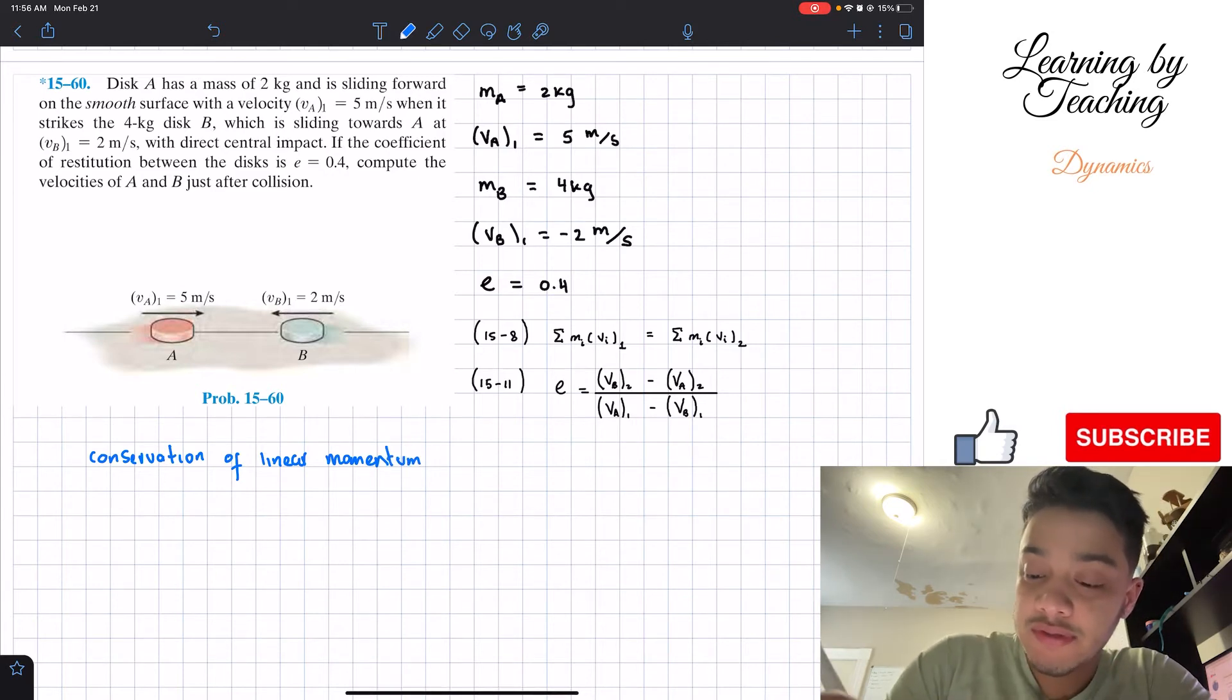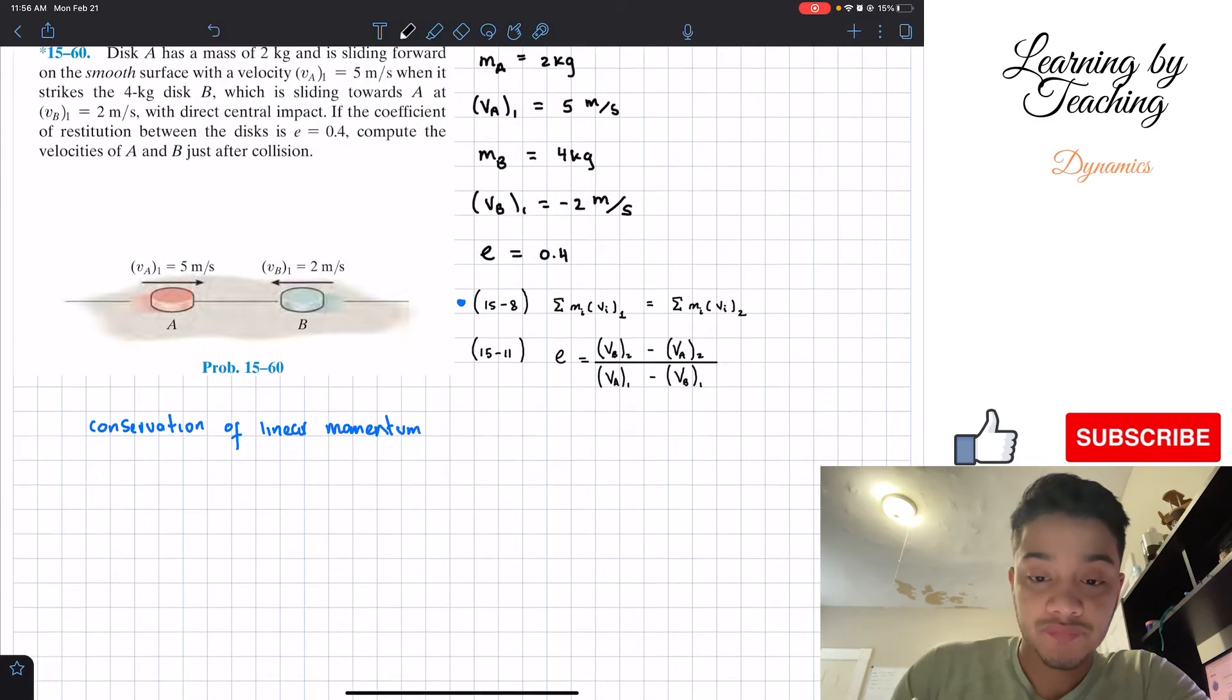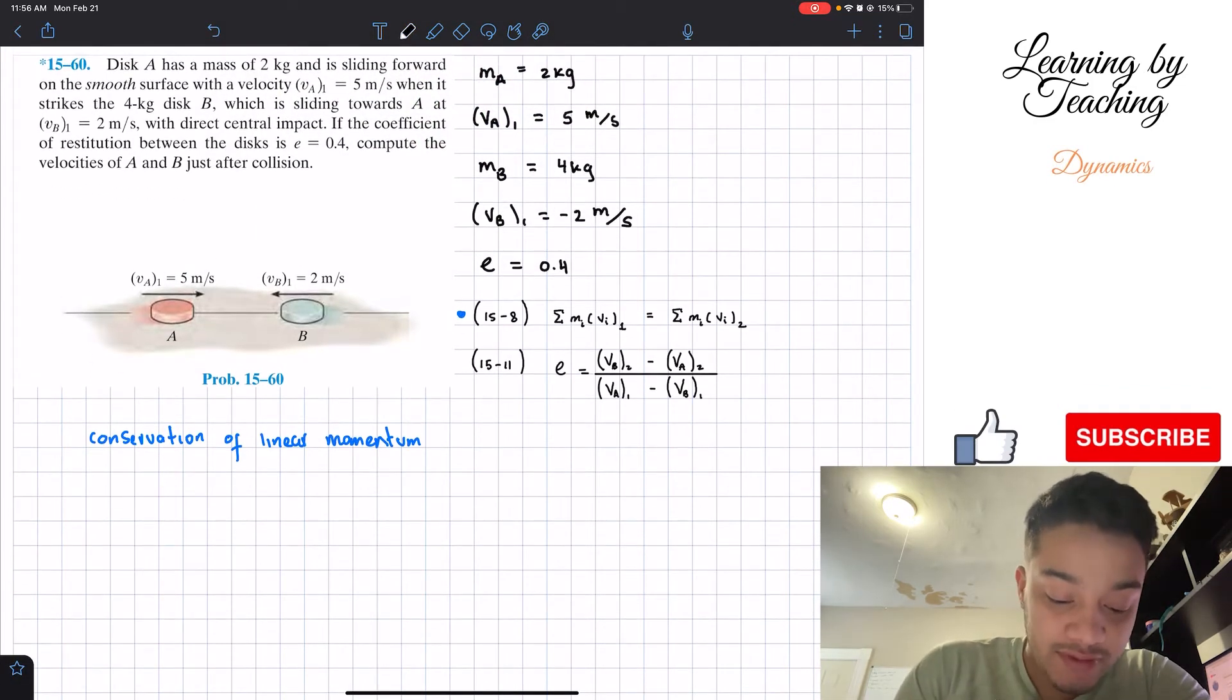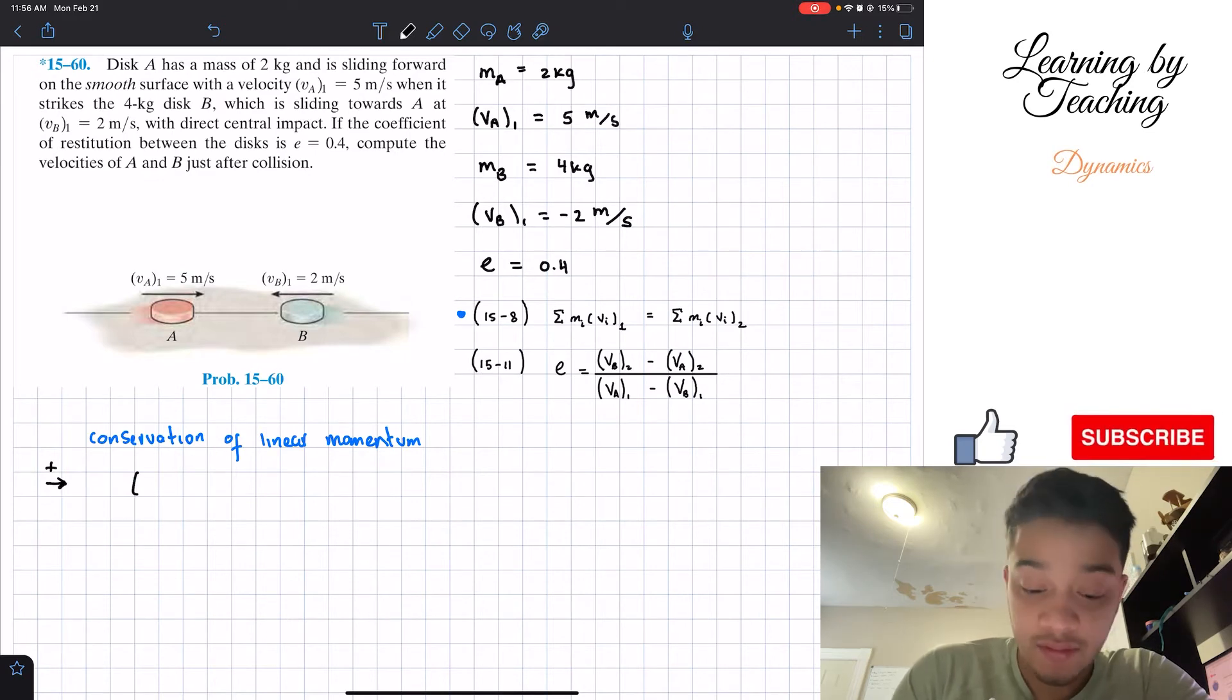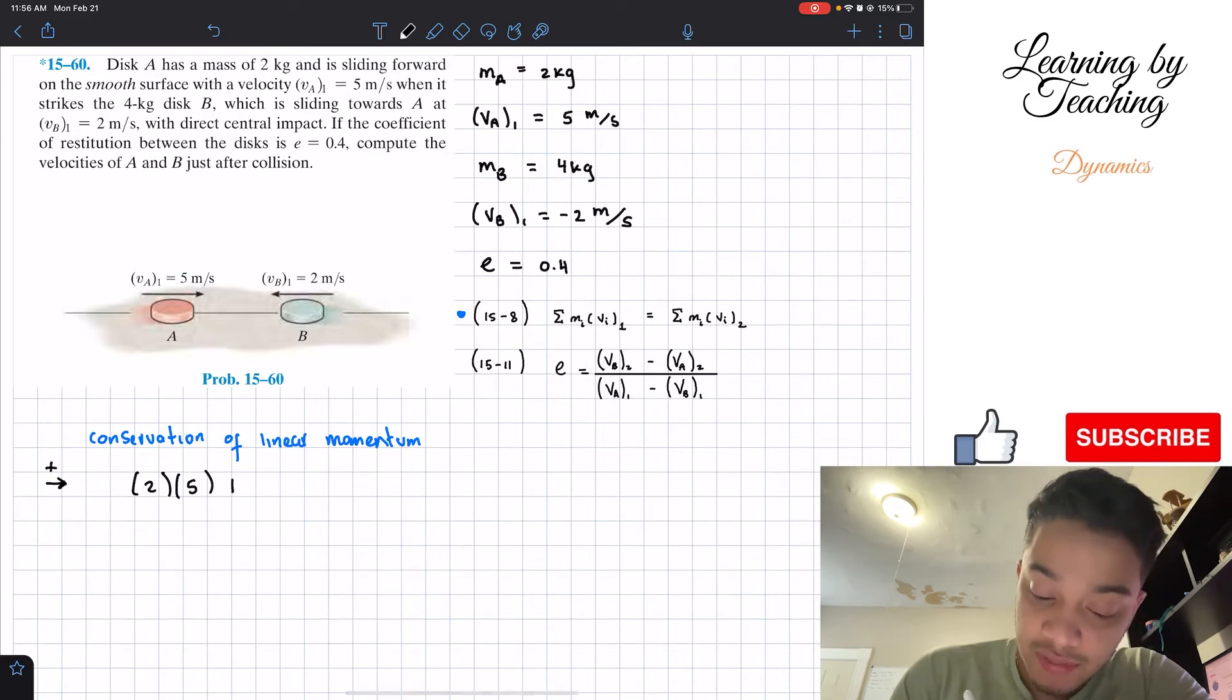And for this one, we're basically utilizing this equation where we have to do the summation of the masses times the velocity in the initial state. So we have two masses. Let's start with mass 1. And again, going to the right is going to be positive. So mass 1, which is mass of A, is 2 kilograms, multiplied by its velocity, 5 meters per second, plus the mass of B, 4 kilograms, multiplied by its initial velocity, which is negative 2 meters per second.